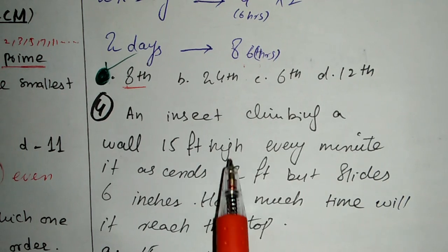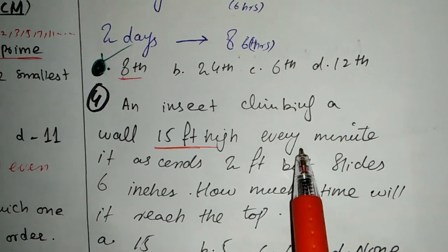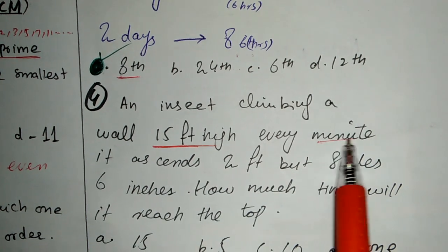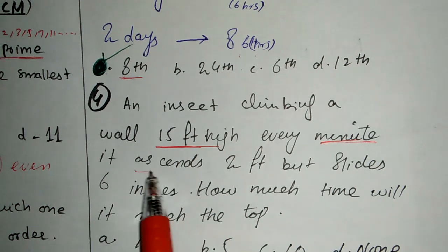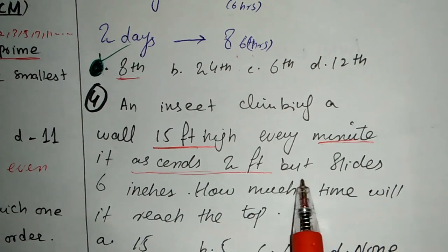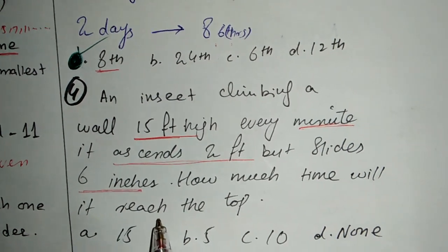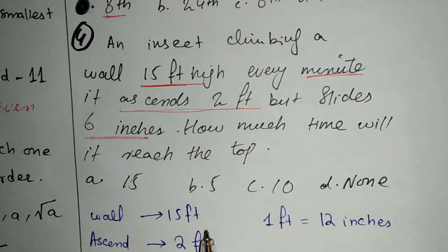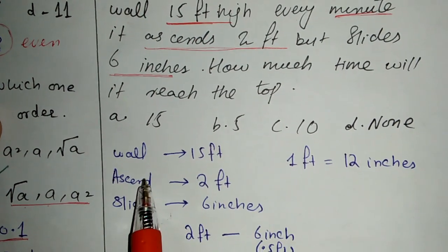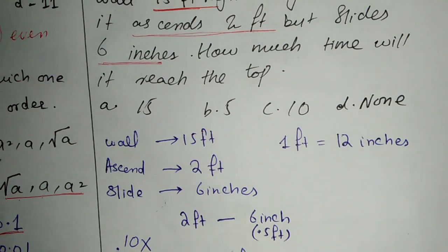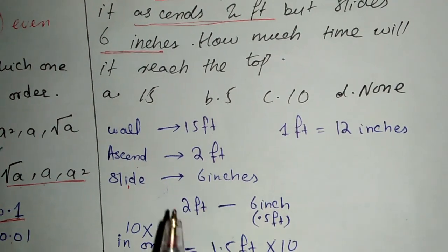Next is an insect climbing a wall. The wall is 15 feet high. Every minute it ascends 2 feet but slides back 6 inches. How much time will it take to reach the top? We have to solve this with different options.